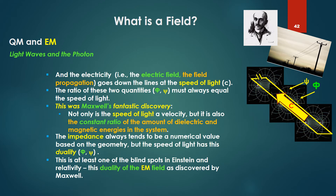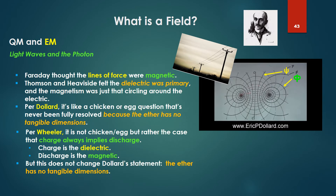Faraday thought the lines of force were magnetic. Thompson and Heaviside felt the dielectric was primary and the magnetism was just circling around the electric. Per Dollard, it's like a chicken-or-egg question that's never been fully resolved because the ether has no tangible dimensions — the ether has no tangible dimensions. For Wheeler, it's not so much a chicken-and-egg question, but rather that charge always implies discharge: the charge is the dielectric, the discharge is the magnetic. But this does not change Dollard's statement: the ether has no tangible dimensions.